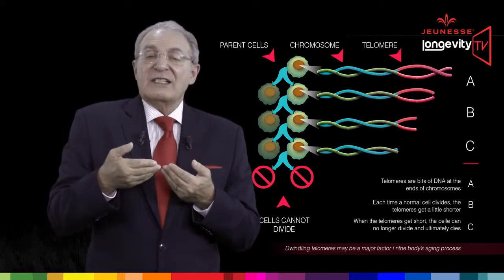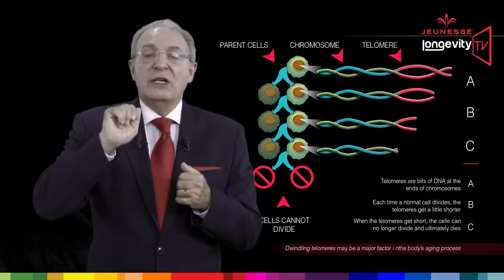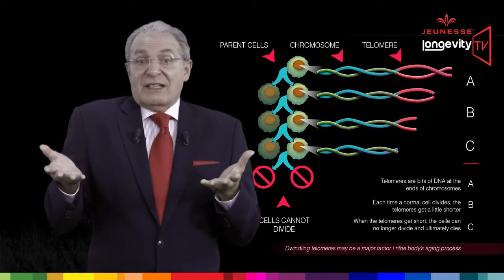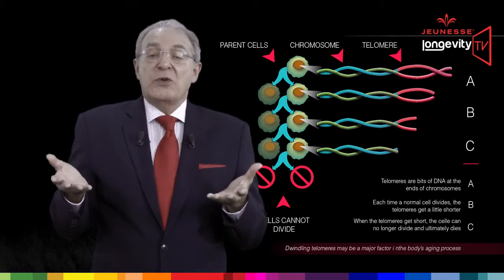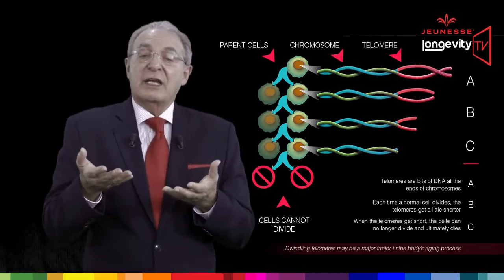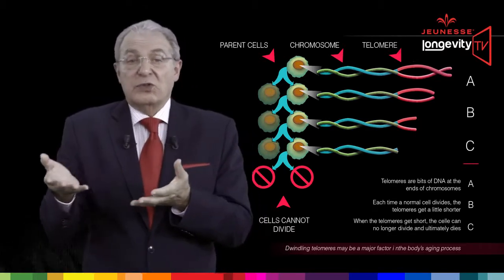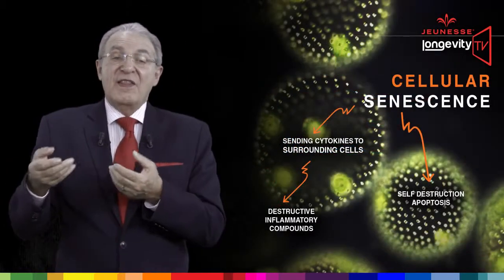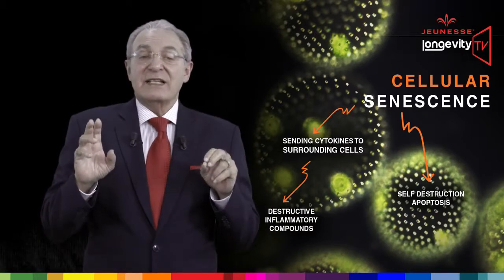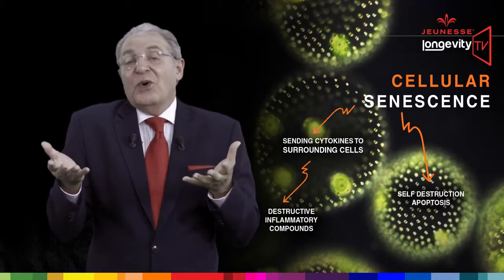Meanwhile, after 50 to 70 divisions, the cells in our body reach a stage where there is no more telomere to protect our DNA. These cells can no longer reproduce themselves — they reach what we call a retirement-like state in which they die or no longer divide. This endpoint is called senescence, and when senescence reaches a majority of cells, we die of old age.